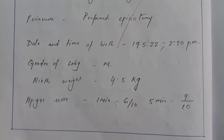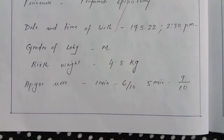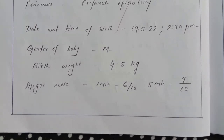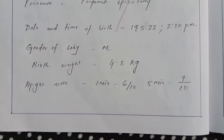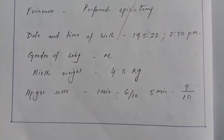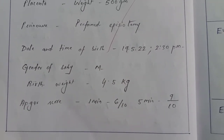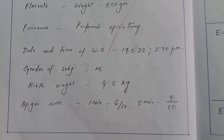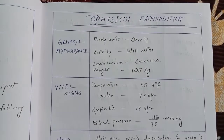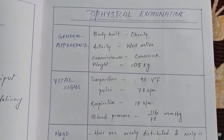Gender of baby: male. Birth weight: 4.5 kg. APGAR score at 1 minute was 6/10 and at 5 minutes was 9/10.